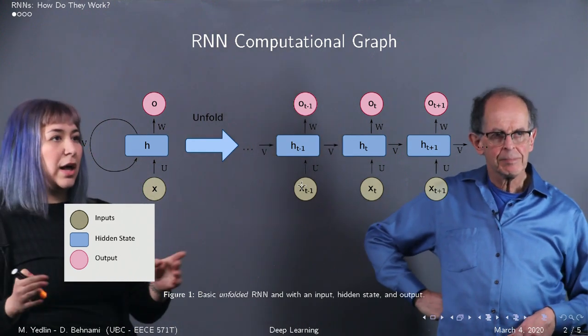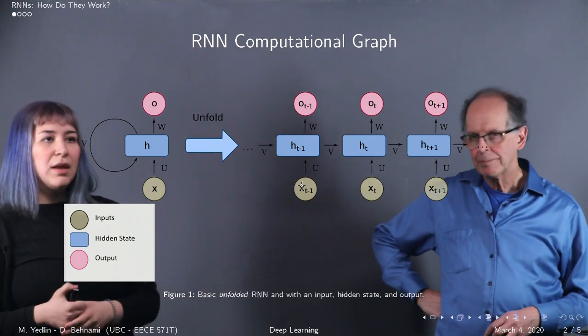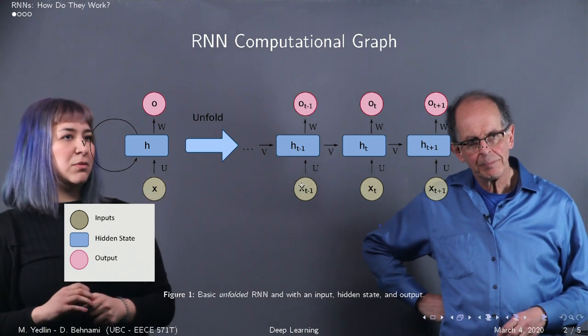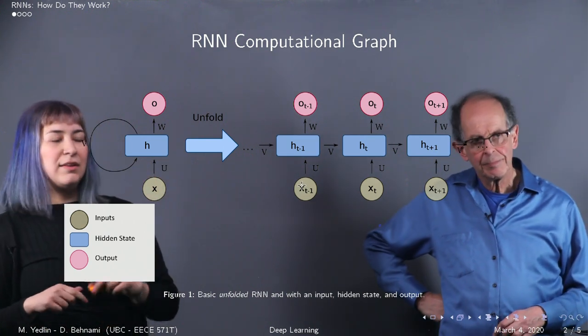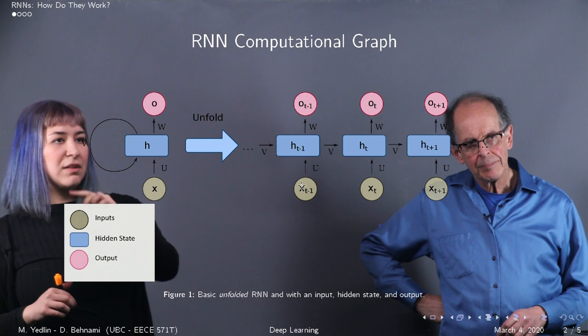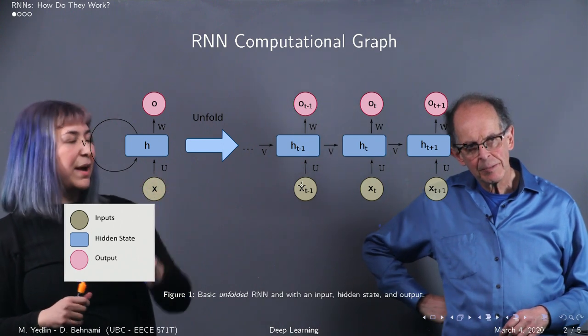So let's say inputs and outputs are aligned, so it's a many-to-many example. And you have this h in the middle, which is the hidden state. And you can see in the folded version, the h kind of feeds back to itself.